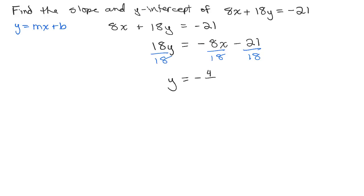So I have negative 4/9 x minus. And we have 21/18. I think we can simplify that, dividing both by 3. So 7/6.